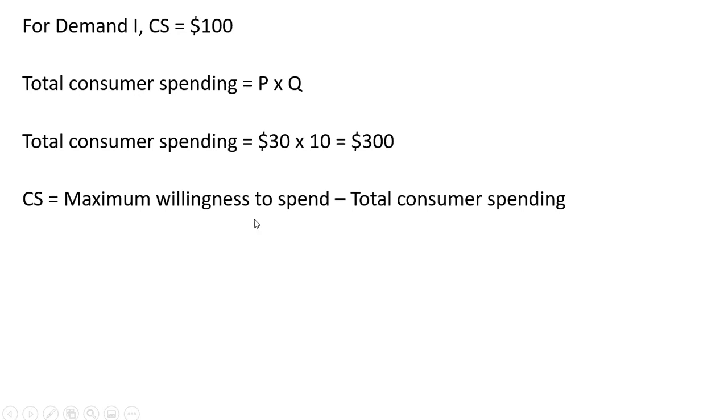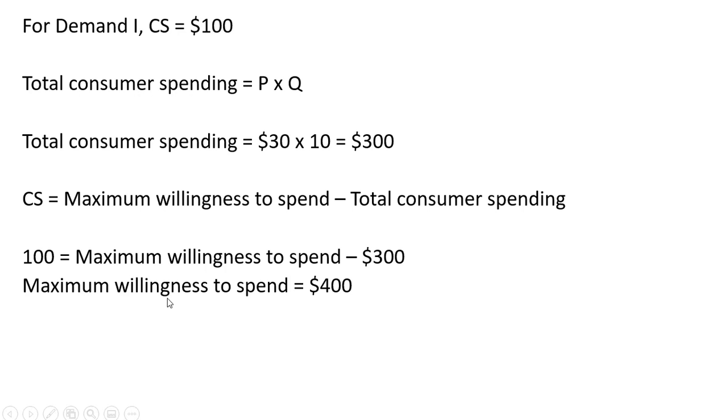The maximum willingness to spend minus the total consumer spending will be consumer surplus. We know consumer surplus here is $100, so I'll set the left-hand side equal to 100. We know that consumers spent $300 on these 10 units, so we can back into the maximum willingness to spend on all of these 10 units. So the maximum willingness to spend, adding $300 to both sides, solving this equation, is $400.